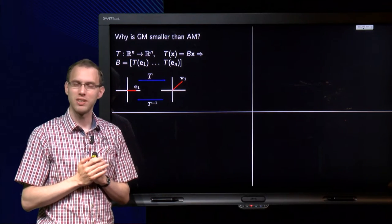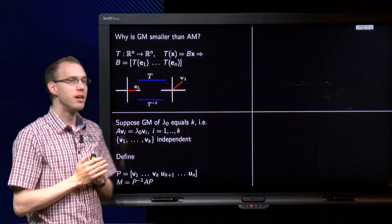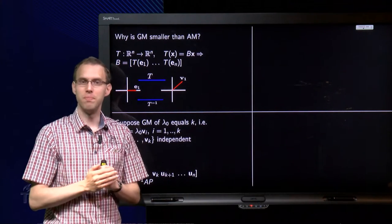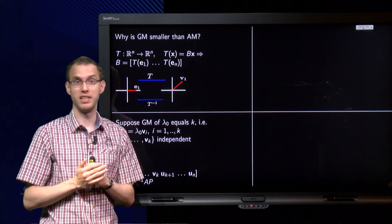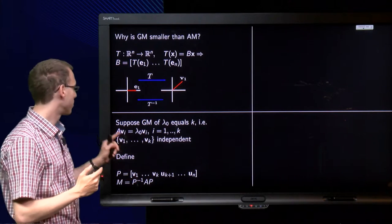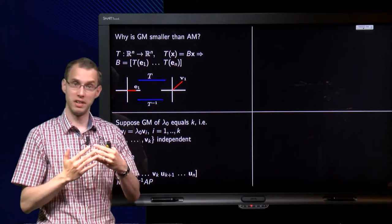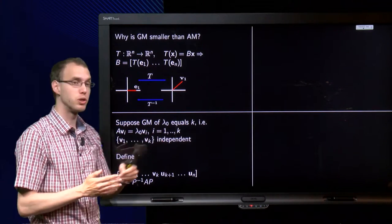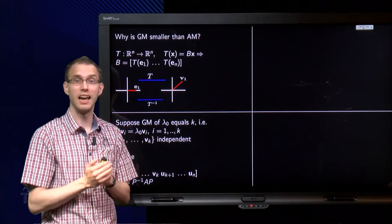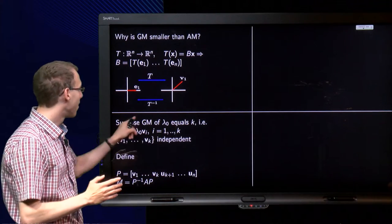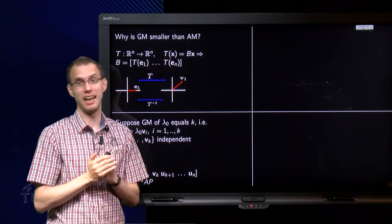Now, what does this have to do with multiplicities? Let's see. Suppose we have some eigenvalue λ₀, and suppose the geometric multiplicity is k over n by n matrix. That means A times vi equals λ₀ times vi for i is 1 to k, where the set of eigenvectors v1 to vk is independent. Because that is what it means that my geometric multiplicity equals k. I have k independent eigenvectors.